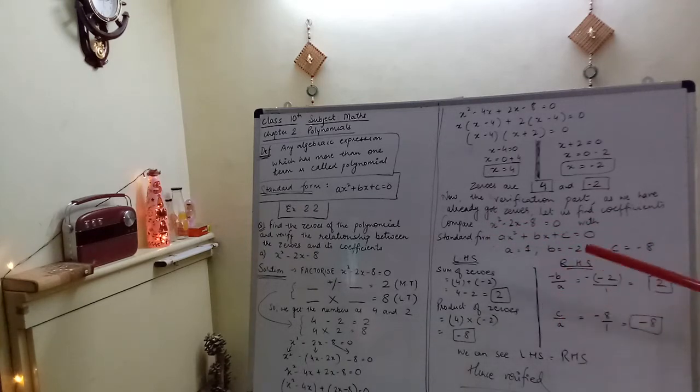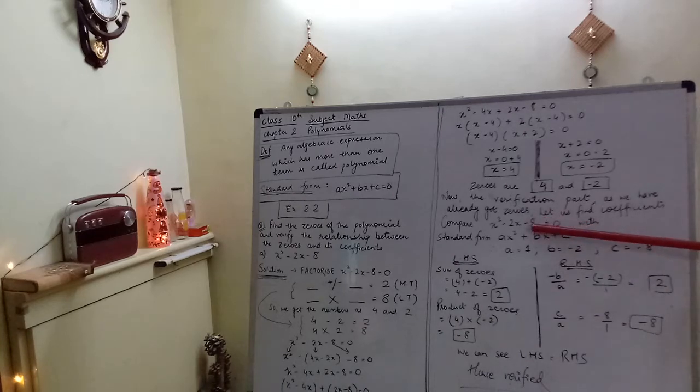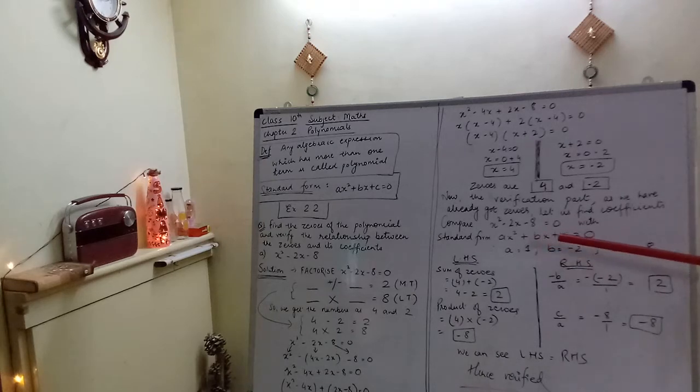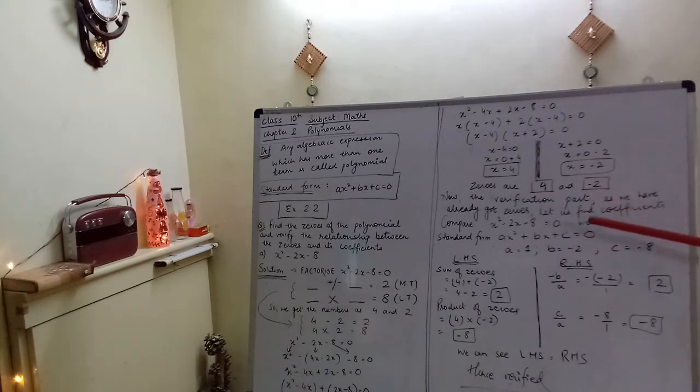Now compare x's coefficient. Here x's coefficient is minus 2, here x's coefficient is b, so b variable's value becomes minus 2. Now we are left with the constants. Constant means without any variable. Here is c and here is minus 8, no variable, so c's value is minus 8. So we got the zeros, we got the variables, coefficients.